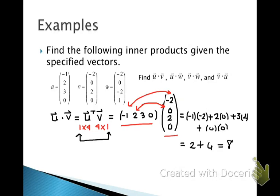So I've made a quick correction. The negative 1 is multiplied by the negative 2, 2 is multiplied by 0, 3 is multiplied by 2, and 0 is multiplied by 0.